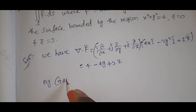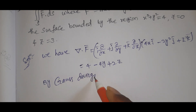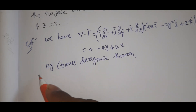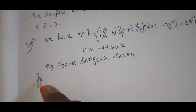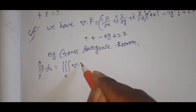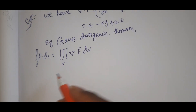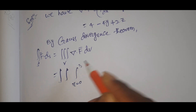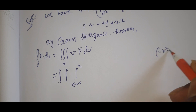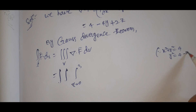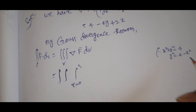By the Gauss Divergence Theorem, we have ∬_S F̄ · dS = ∭_V ∇ · F̄ dV. That equals the triple integral with z from 0 to 3.